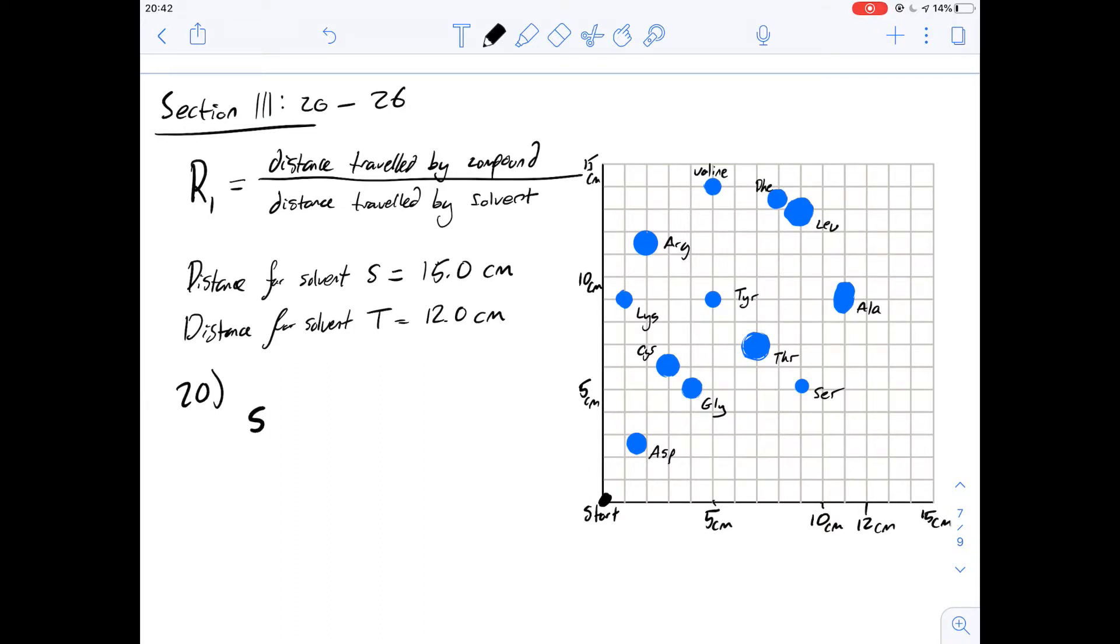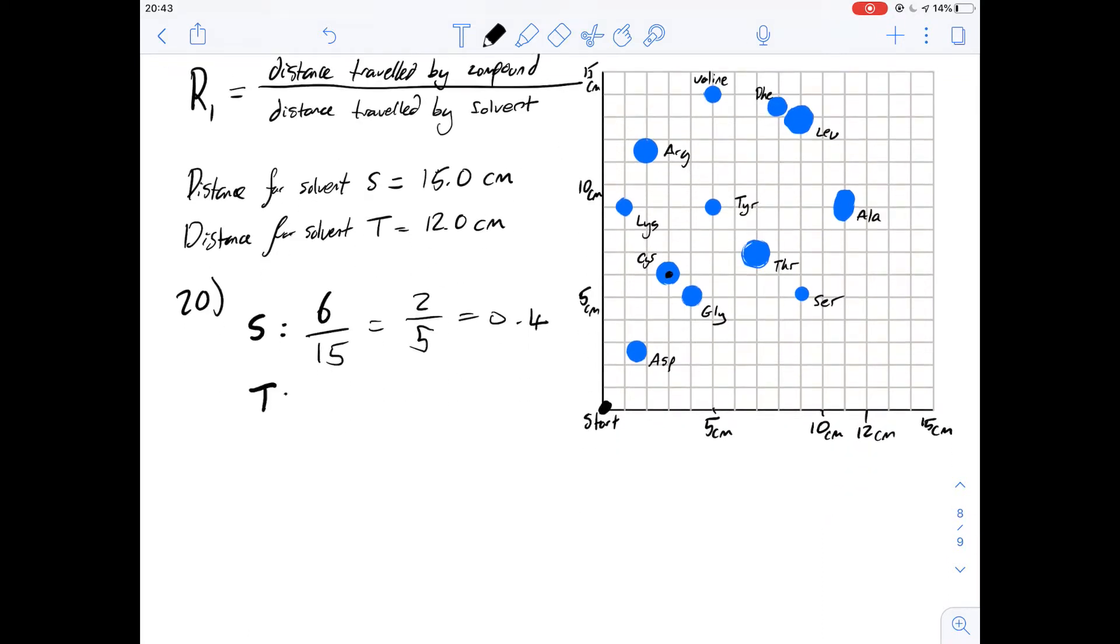So for S we're going to be looking at cysteine which is this one here. I'm using shorthand for this just to make it easier to read. So Cys is cysteine. For S the distance travelled by the compound is going to be 6 centimeters and the distance travelled by the solvent is 15. So that gives us a ratio of 2 over 5 and a decimal of 0.4. So that already tells us the answer is C.